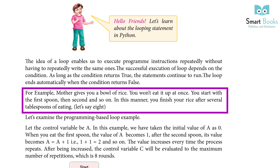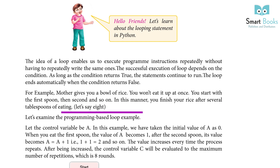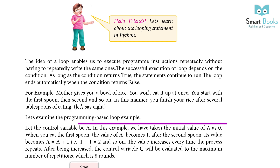The loop ends automatically when the condition returns false. For example, mother gives you a bowl of rice — you won't eat it all at once. You start with the first spoon, then the second, and so on. In this manner, you finish your rice after several tablespoons of eating — let's say 8.